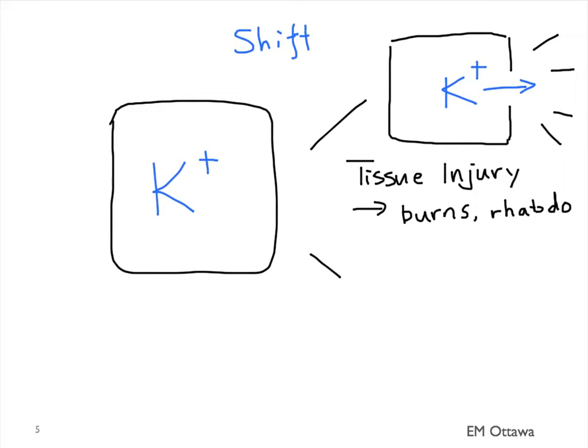Potassium can also get out of the cells in exchange for another ion getting into the cells. Specifically in acidosis, hydrogen ion will enter the cell while potassium will get out of the cells.